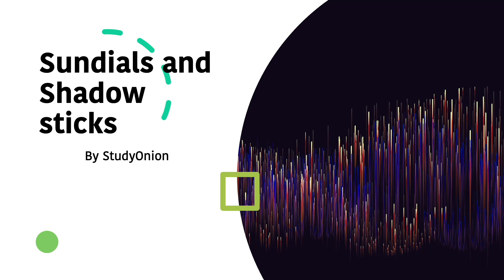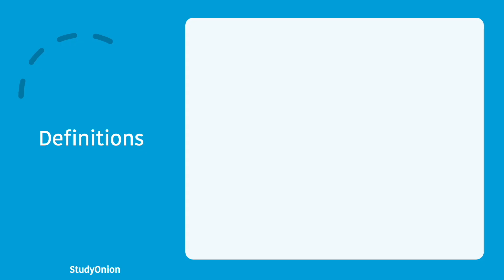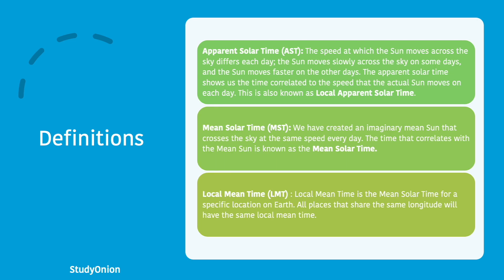We're just going to be talking about a few definitions to start off with. The speed at which the sun moves across the sky will differ on different days — the sun moves slowly across the sky on some days and moves faster on others. The apparent solar time shows us the time correlated to the speed at which the actual sun moves on each day, and this is also sometimes known as the local apparent solar time, abbreviated as AST.